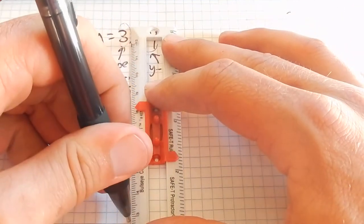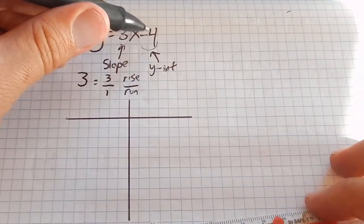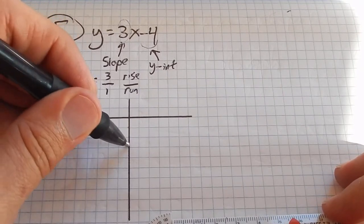So get a little sketch of a graph here. Starts at negative 4 on the y-axis. 1, 2, 3, 4.